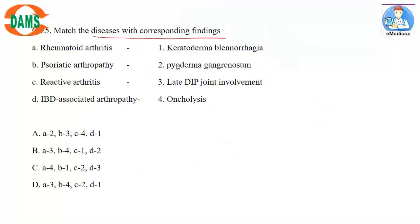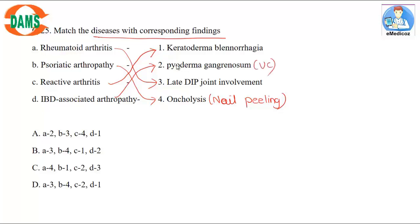Question 25: Match the following diseases with their corresponding findings. Rheumatoid arthritis — late DIP involvement. Psoriatic arthropathy — onycholysis, also described as nail peeling. Reactive arthropathy — associated with keratoderma blennorrhagica. IBD-associated arthropathy — related with pyoderma gangrenosum, seen more commonly with ulcerative colitis. So the matching is: A-3, B-4, C-1, D-2 — correct answer is option B.